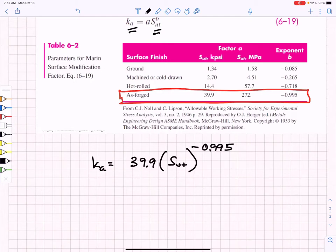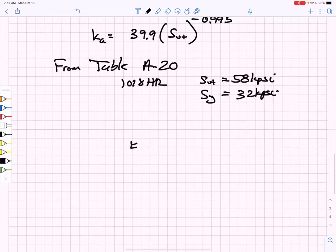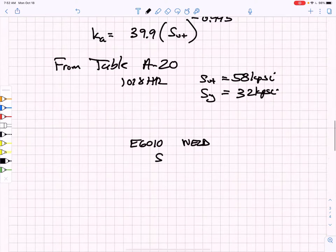We're going to need the ultimate tensile strength from table A20. For the 1018 hot roll, we have an ultimate tensile strength of 58 kpsi and a yield strength of 32 kpsi. For the E6010 electrode, we have an ultimate tensile strength of 62 kpsi and a yield strength of 50 kpsi.